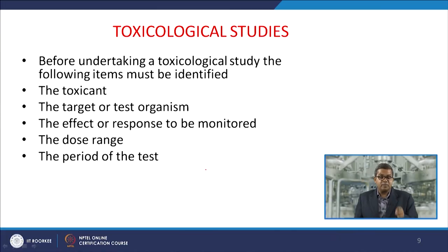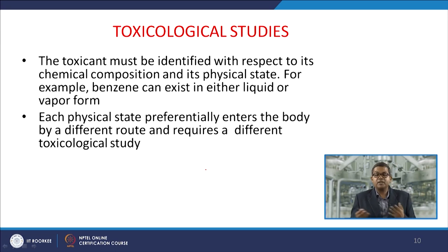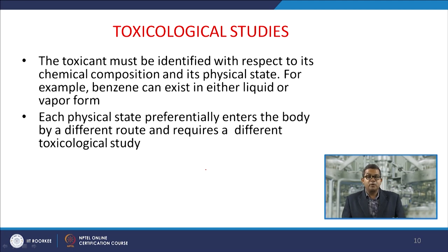While taking any toxicological study, the toxicant must be identified with respect to chemical composition and physical state. For example, benzene can exist in either liquid or vapor form, so the entry route would be different — liquid benzene may be ingested, while vapor form is inhaled. The target organ and responses would also be different accordingly.